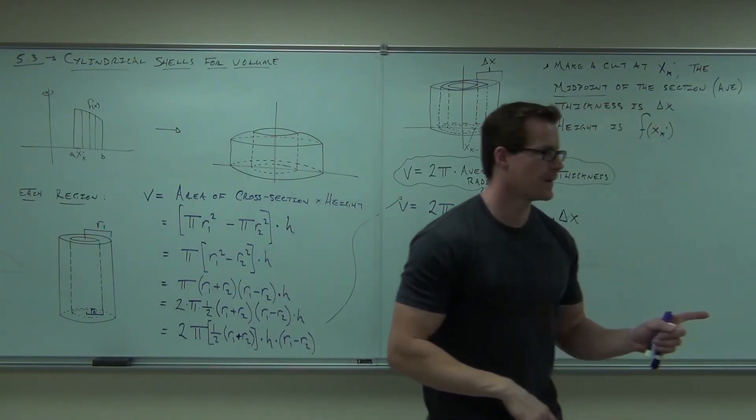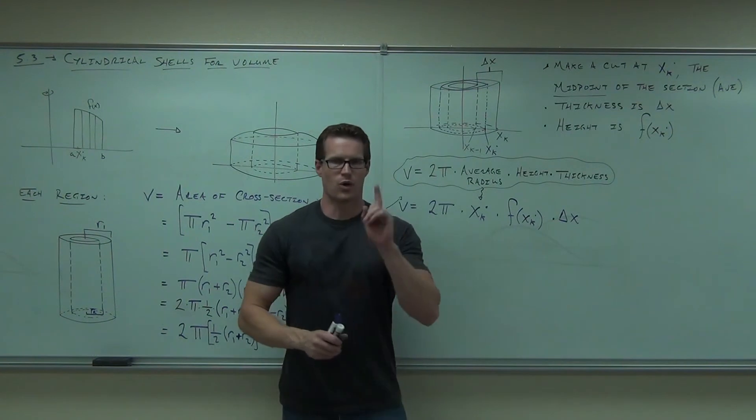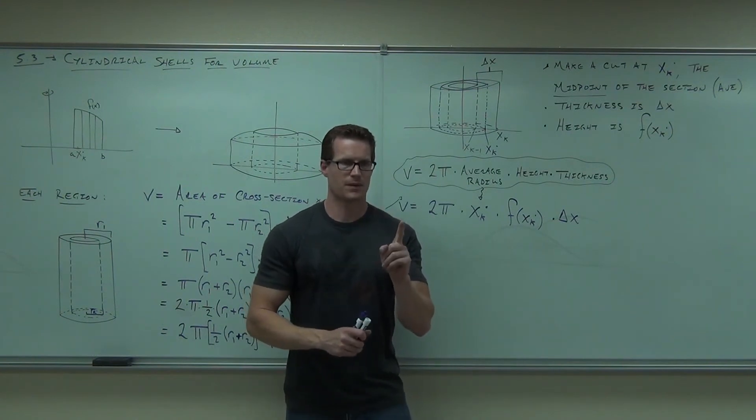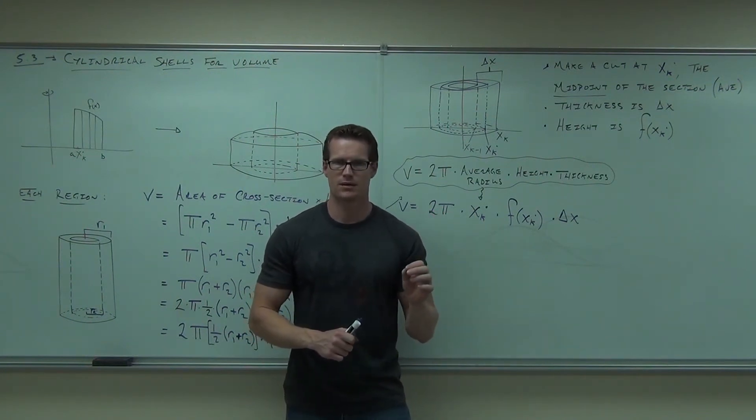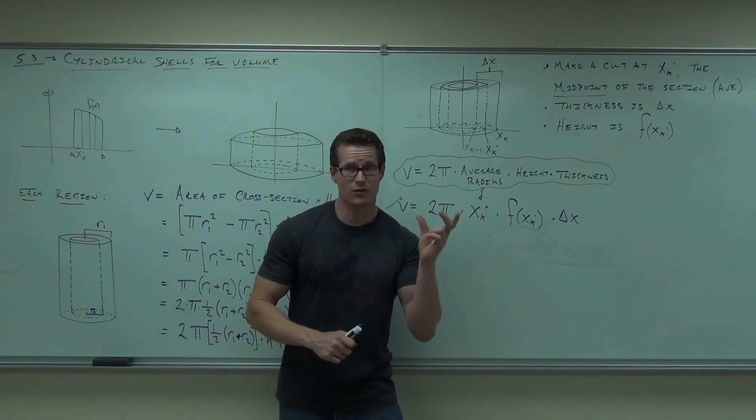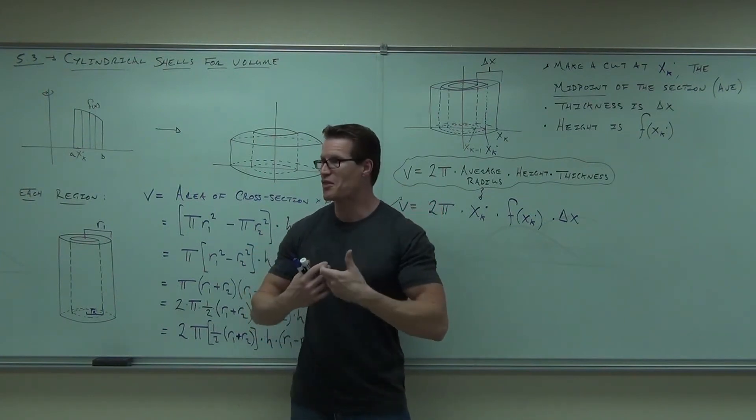That's not our formula. That's our formula for one individual shell of x sub k. That's one of them. How do I find all of them? Not a limit yet. This is one of them. How do I find more of them? I add them all of them? Yes. This is one shell.